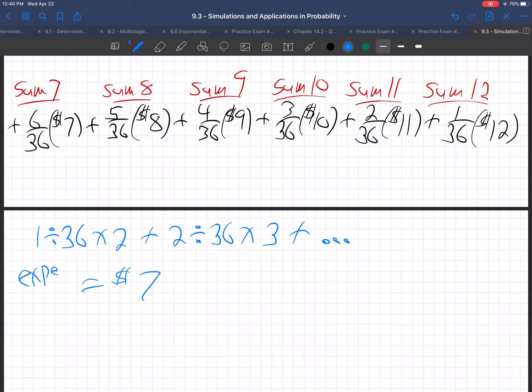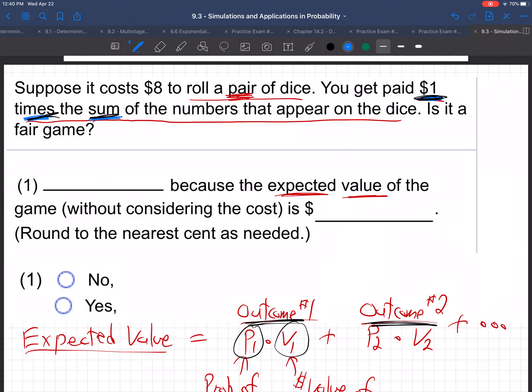So that's the expected value. In other words, that's the average. If you played this game hundreds and hundreds of times, where you rolled the two dice and they paid you $1 times the total, whatever the numbers added up to be, on average, after hundreds and hundreds of times, you would make $7 on average. So let's go back up here to answer that question. So the expected value of the game, without considering the cost, is $7. And they said it costs $8 to play the game. So is that a fair game? No.